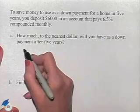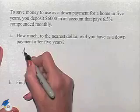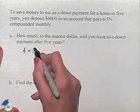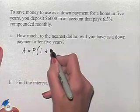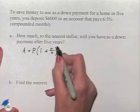We're going to use the formula for interest compounded n times a year: A equals P times one plus r over n to the nt power.